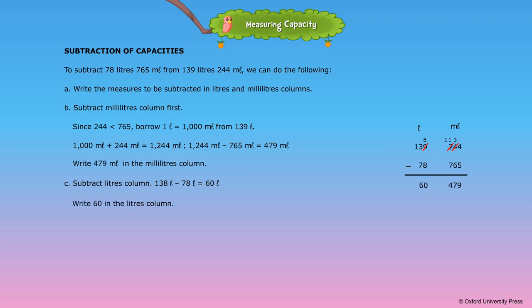Write 60 in the liters column. So, 139 liters 244 milliliters minus 78 liters 765 milliliters is equal to 60 liters 479 milliliters.